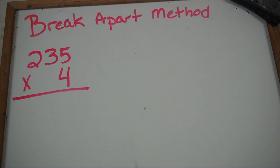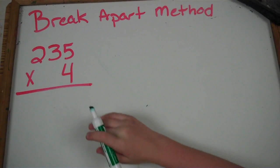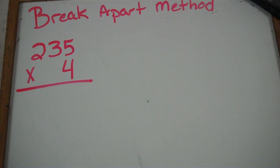This is the break apart method. To start with the break apart method, you write your number in standard form. We are using 235 times 4.